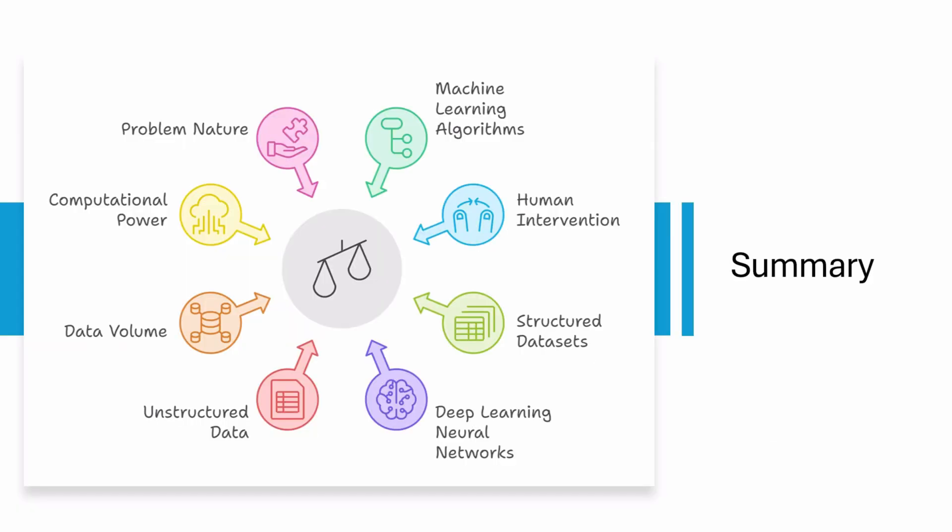In summary, machine learning and deep learning are closely related yet distinct in their complexity and approach to data processing. Machine learning encompasses a wide range of algorithms that learn patterns from data, often requiring human intervention for feature selection, and generally works well with smaller, structured data sets. Deep learning, a subset of machine learning, employs multi-layered neural networks that automatically discover important features and excel with large volumes of unstructured data.